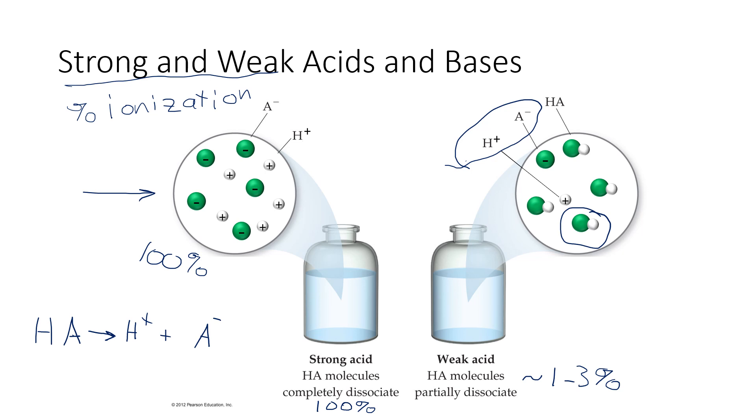And the reason this is important is that for most of the chemical reactions that acids undergo, the active ingredient is that H plus ion. So in a strong acid, every possible H plus ion is available to do those reactions. But in a weak acid, only about 1 to 3% of those H plus ions are available because the rest of them are stuck to the A minus ions.